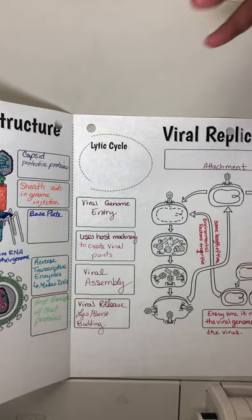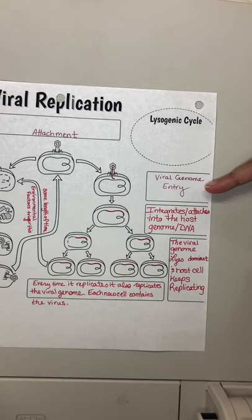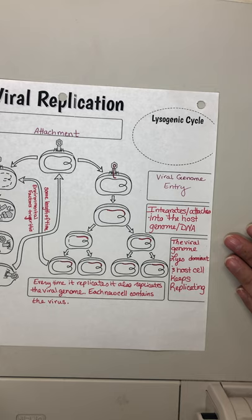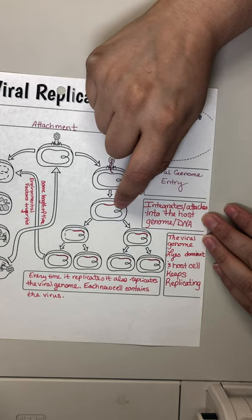When we move to the lysogenic cycle, we use the idea that it lies in wait. We do have viral entry, and the red line represents the viral genome. That viral genome actually integrates into the host genome — the host DNA — so now it's part of this long, big strand.